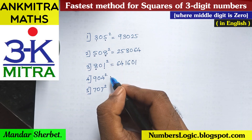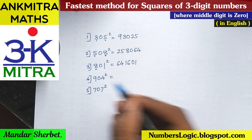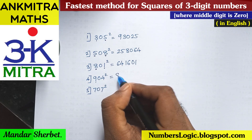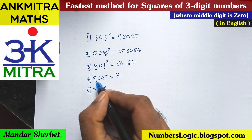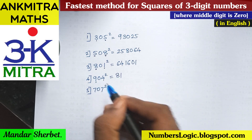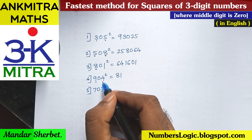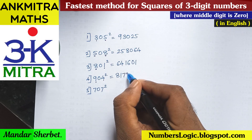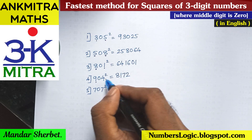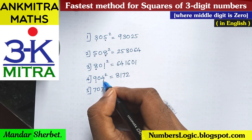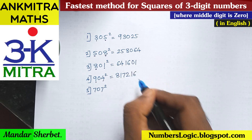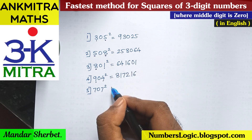For the next example, 904 squared: square of 9 is 81. Then 9 times 4 is 36, and double of 36 is 72. Finally, square of 4 is 16. The answer is ready: 904 squared is 817216.